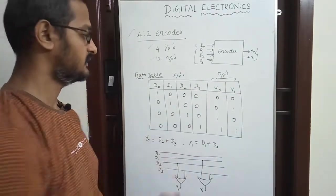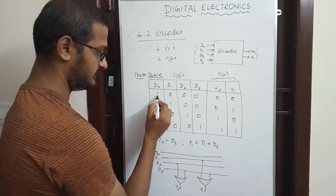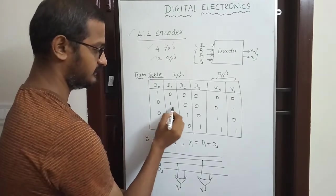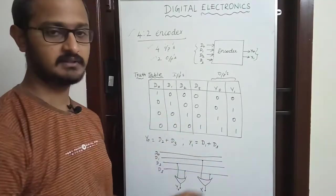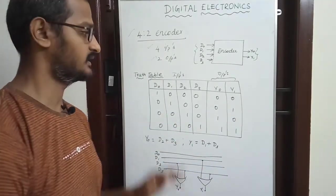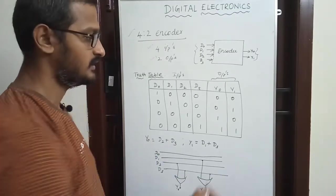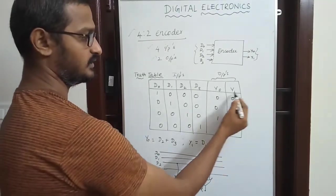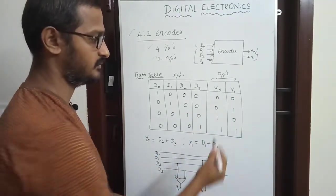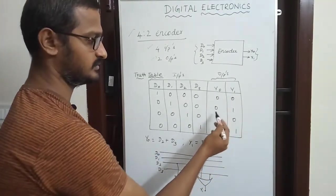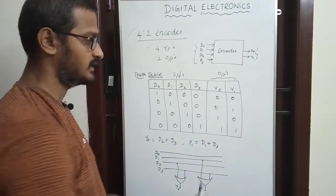The inputs are d0, d1, d2, d3. The output combinations for y0 and y1 are: 0 0, 0 1, 1 0, and 1 1.